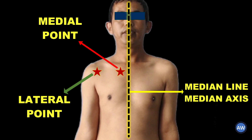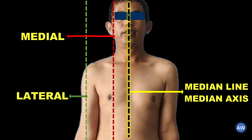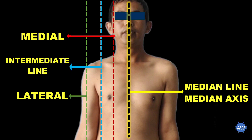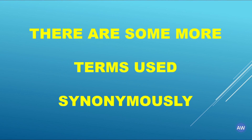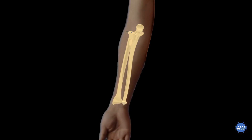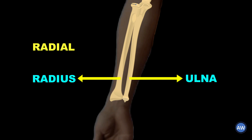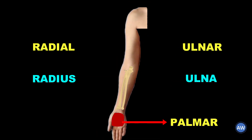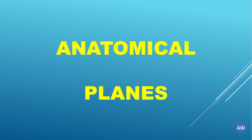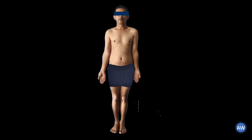Now let us draw another line in between the earlier medial and lateral lines. This line in between is called the intermediate line or plane. There are some more terms used synonymously: in the upper limb, the term radial can be used for lateral, as the lateral bone over here is the radius. Similarly, with the ulnar bone on the medial side of the forearm, the term ulnar can be used for medial. The term palmar can be used while describing the anterior aspect of the palm.